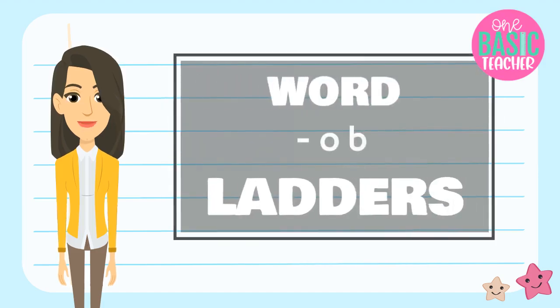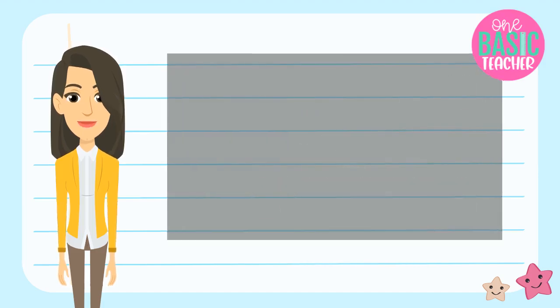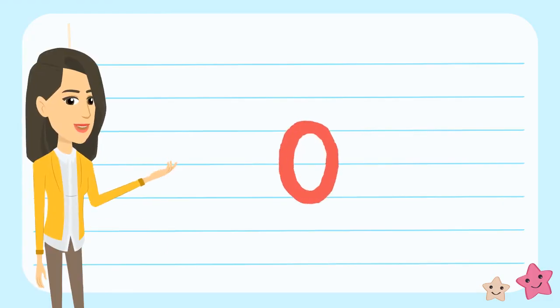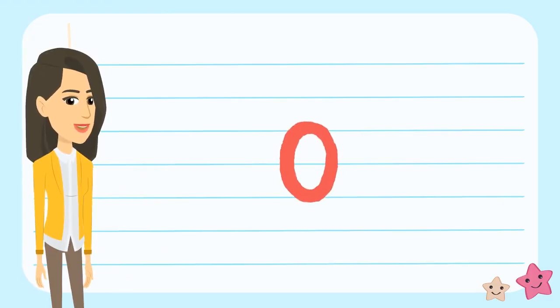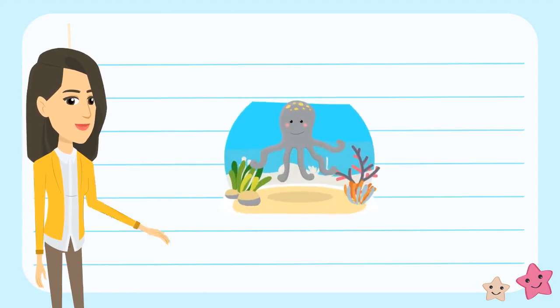In this episode, we're going to write some short O words. The letter O has many sounds, but the short O sound makes the sound 'aww', like an octopus.